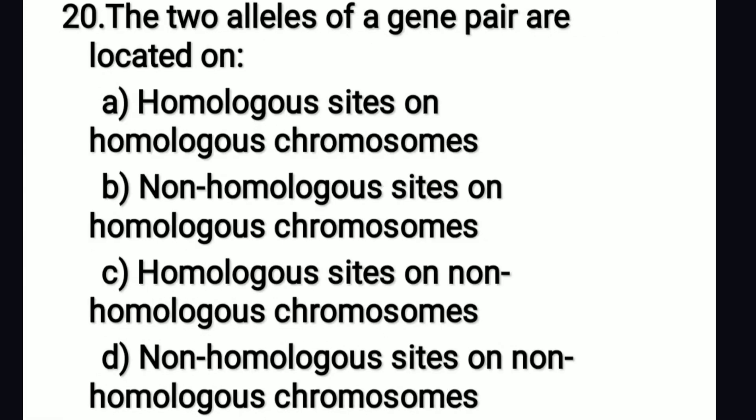The two alleles of a gene pair are located on: the right answer is option A — homologous sites on homologous chromosomes.